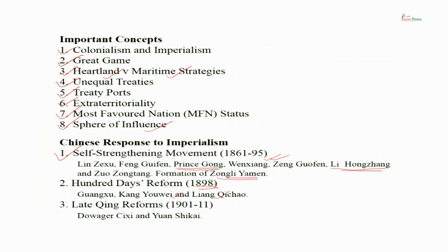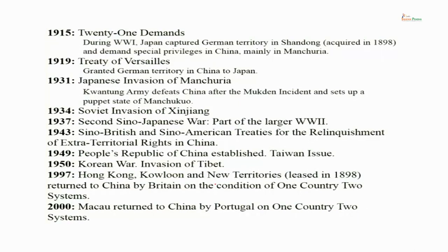Unfortunately for the conservatives, the situation was worsening, and after the Boxer Rebellion — when China was again humiliated by the invasion of 8 nations — even the conservatives decided it was time for reforms. Dowager Cixi and upcoming military leaders like Yuan Shikai started reforming the Qing government, but it was too late. The whole Confucian system had collapsed, it had failed, and the civil service exams were abolished. Eventually the Qing dynasty was overthrown in 1911, and by 1912 China became a republic.